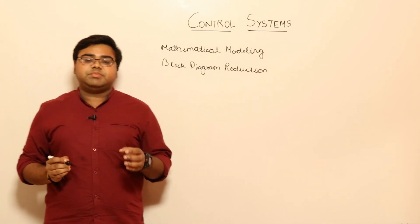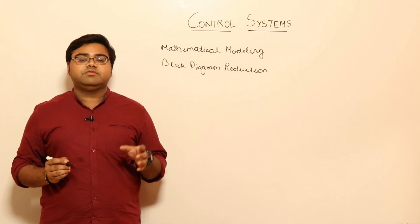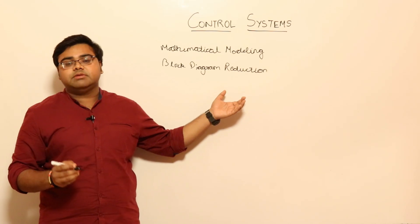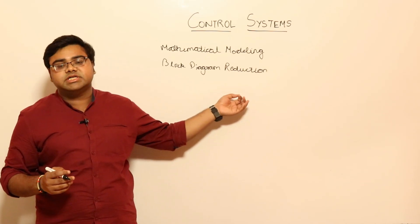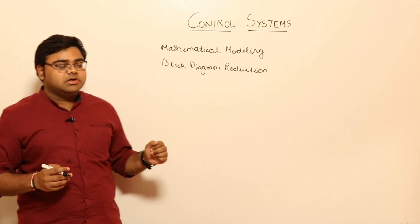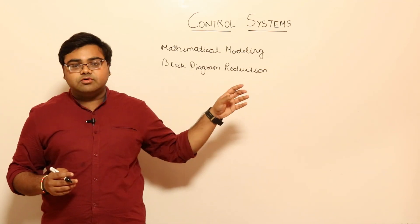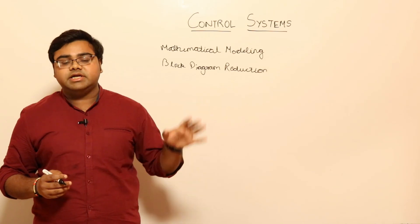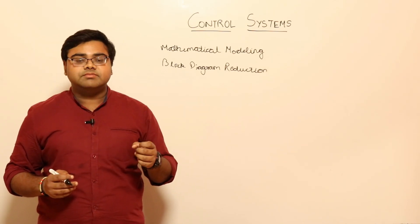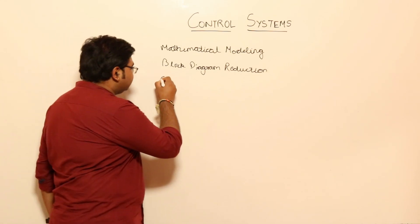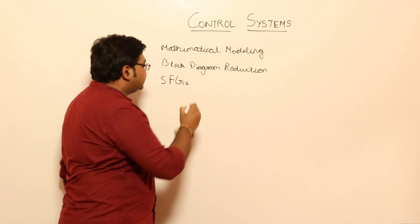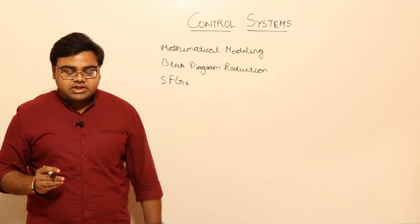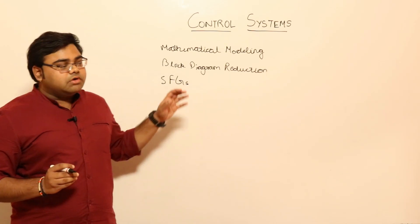After block diagram reduction, a special variant of graphs called Signal Flow Graphs (SFGs) has been developed to overcome some drawbacks of block diagram reduction — you can't apply that technique everywhere. Frequent questions have been asked from both block diagram reduction and signal flow graphs in GATE and ESE, in both prelims and mains. The method to solve SFGs is Mason's Gain Formula.